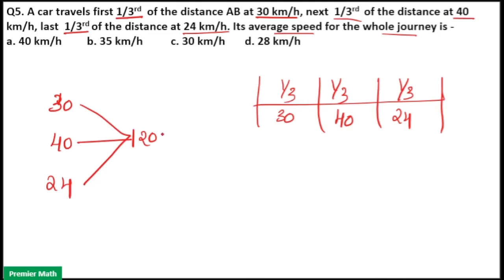So one third of the distance is 120 km. At a speed of 30 km/h, that takes 120 ÷ 30 = 4 hours. At 40 km/h, 120 ÷ 40 = 3 hours. At 24 km/h, 120 ÷ 24 = 5 hours.